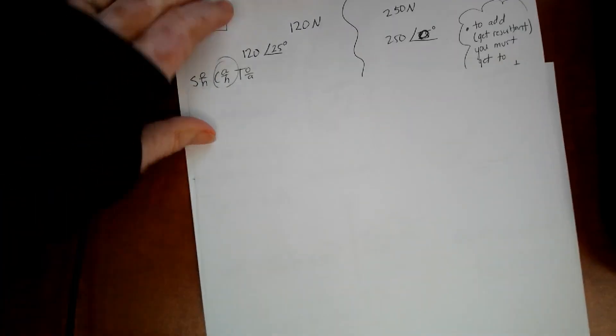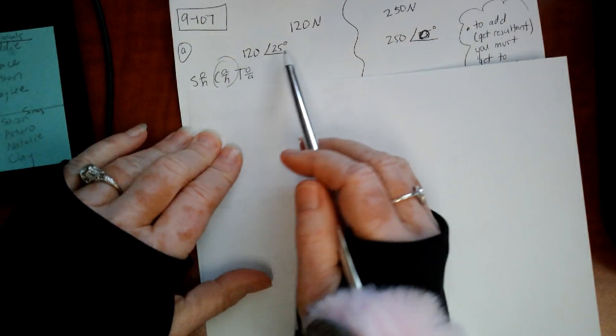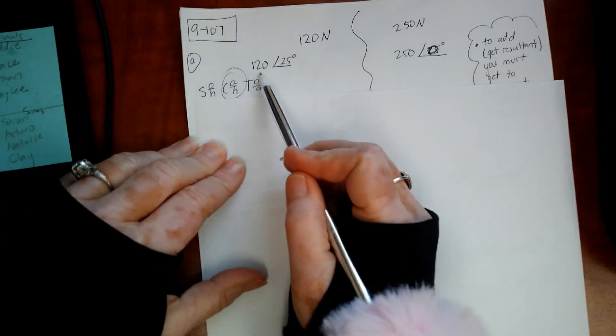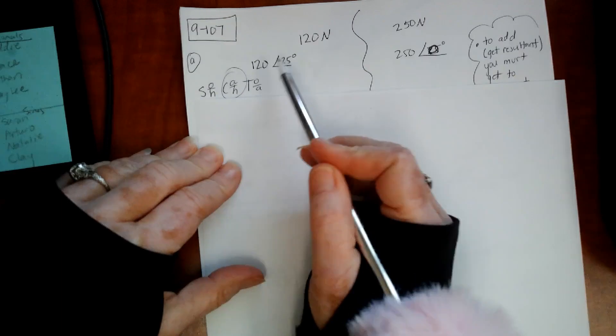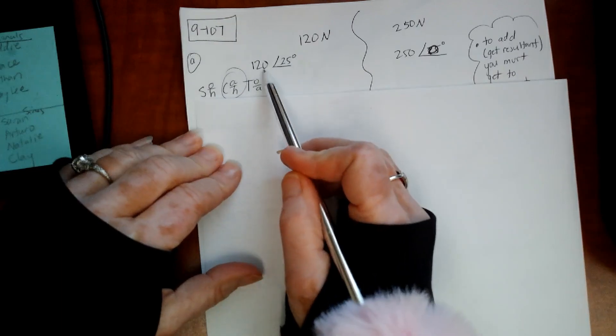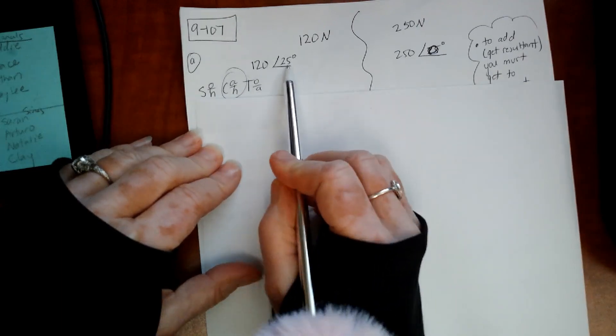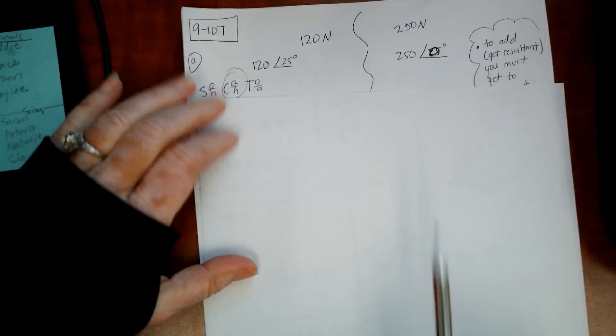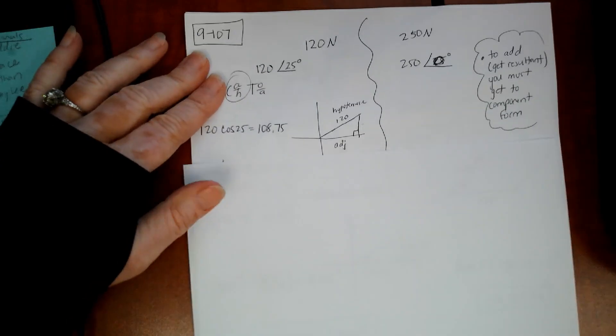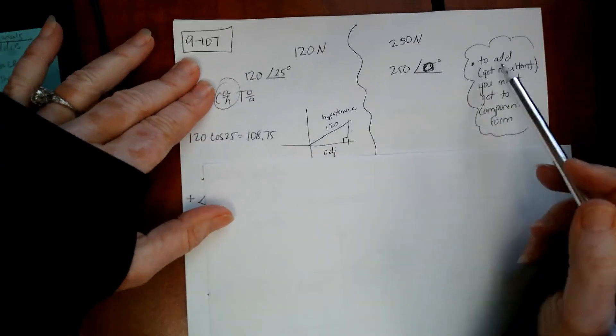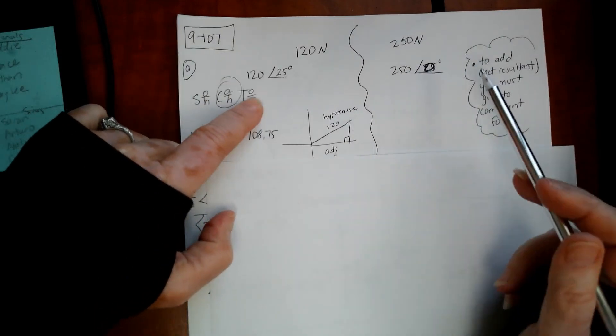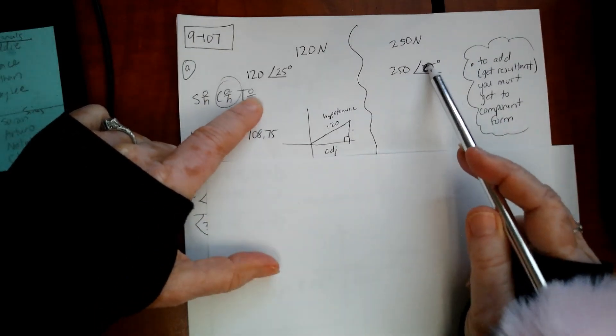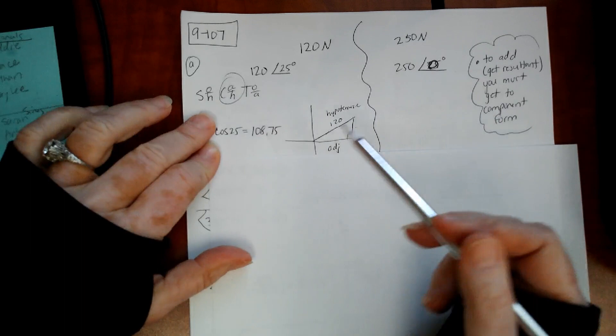This is a notation that you can use. This is 120 at 25 degrees, so the magnitude is 120 and the direction is 25 degrees. If you remember how to get the resultant, I have to add these two vectors together. And this says 0 degrees.